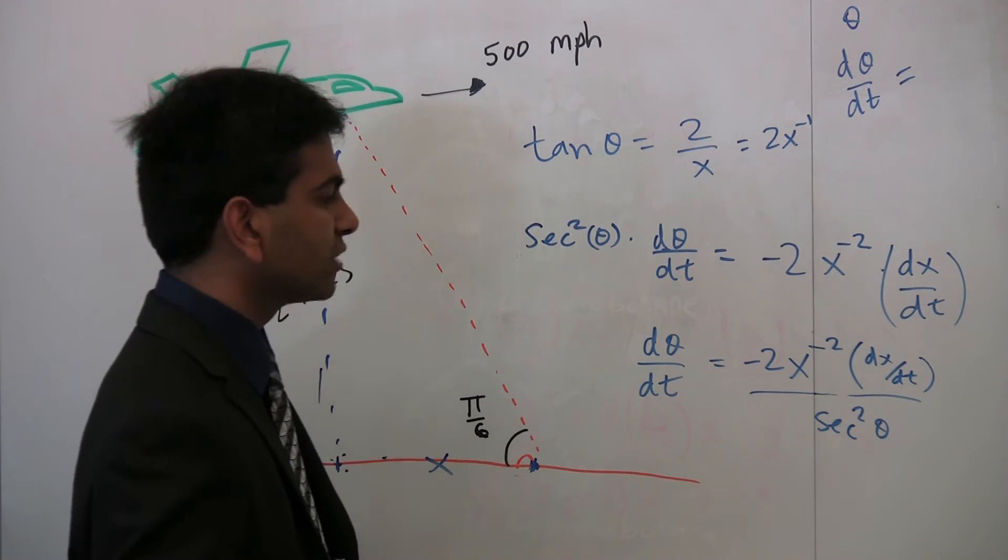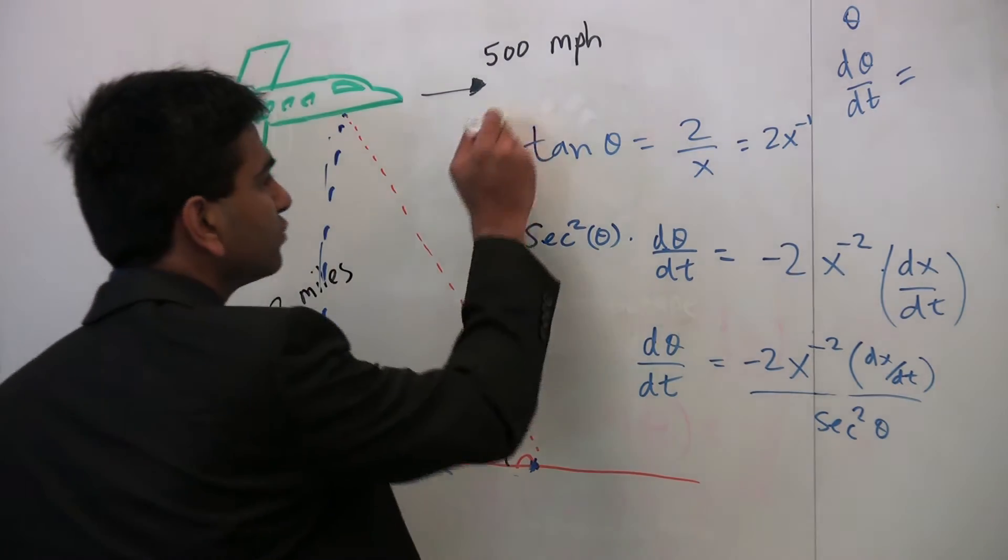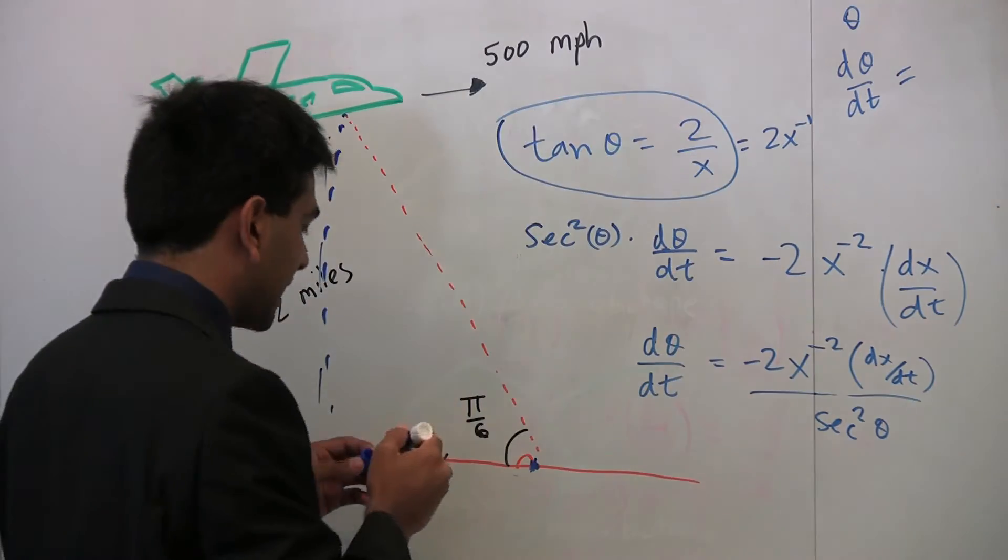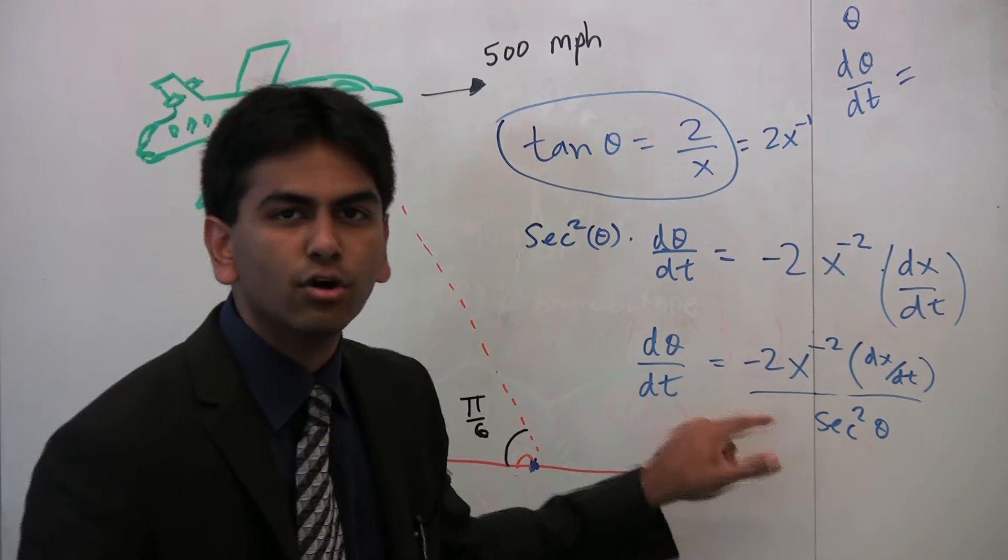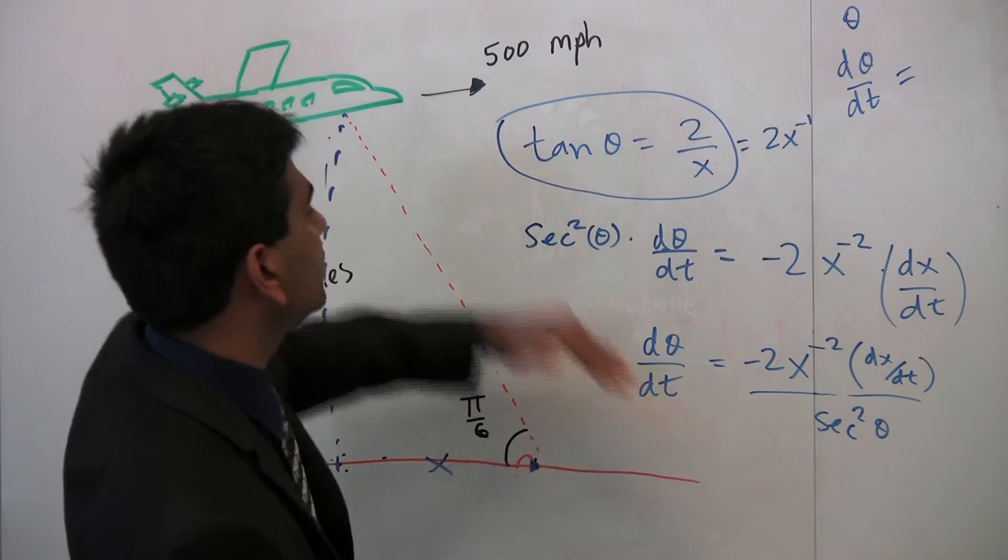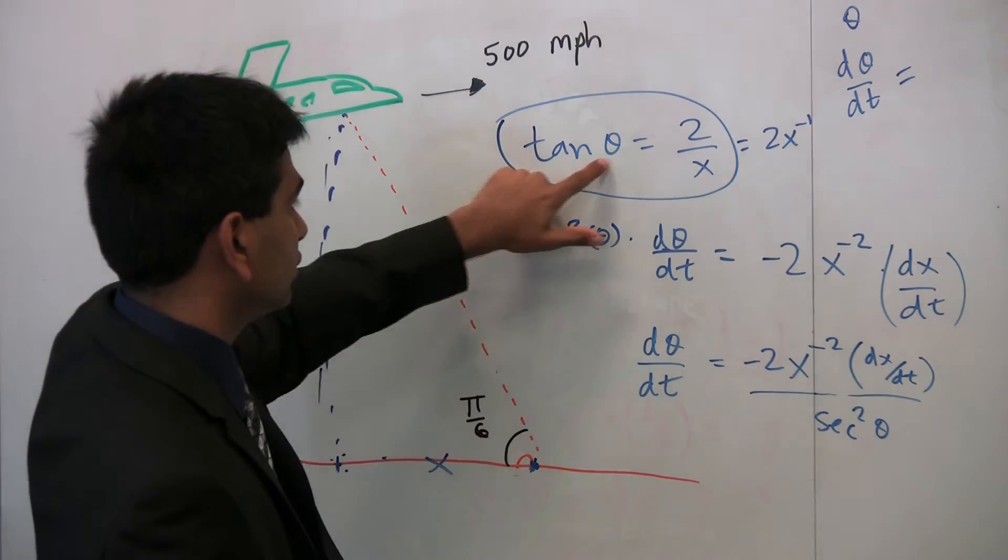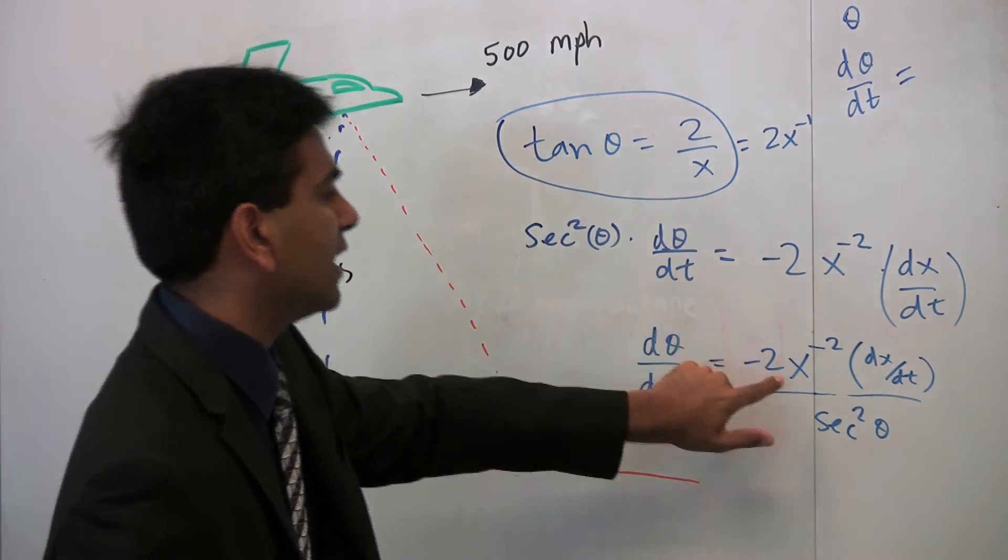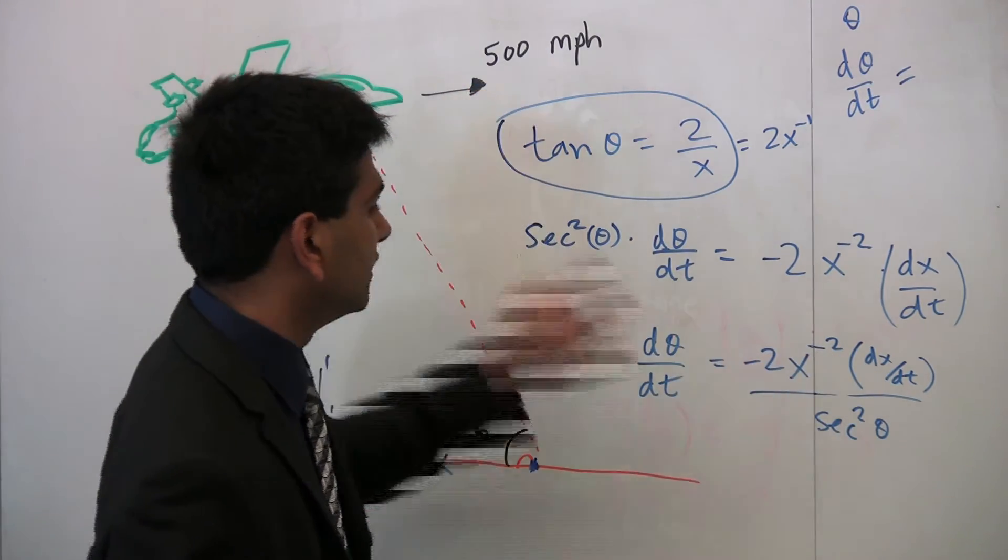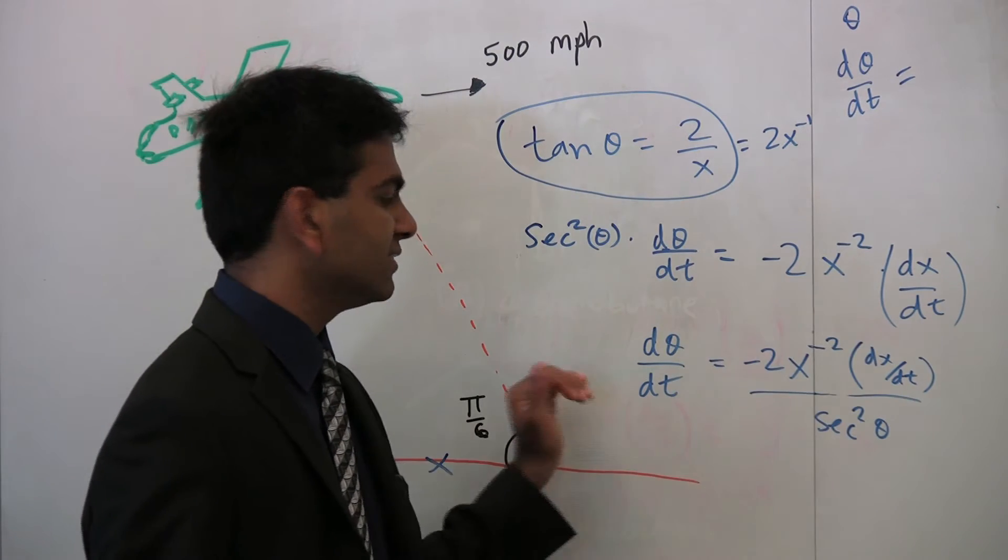Well, we can actually figure that out using the original equation. So, that's one thing about related rates problems. A lot of times, you're going to get down to the answer, except you're going to not know one thing. So, just know that you can go back up, and you can sort of find that. So, here, since we already know theta pi over 6, we can use that to solve for x. So, once we have our x, our dx/dt, and our secant squared of pi over 6, that will give us the answer over here.